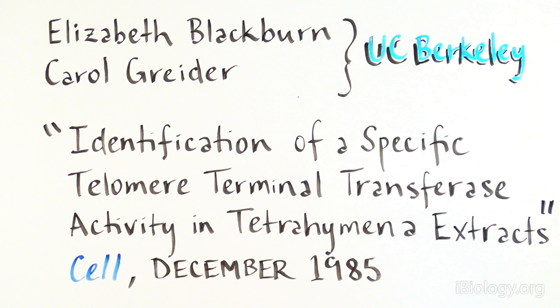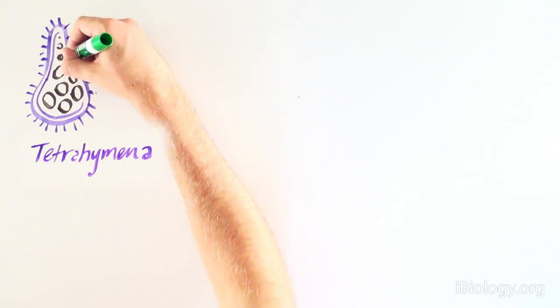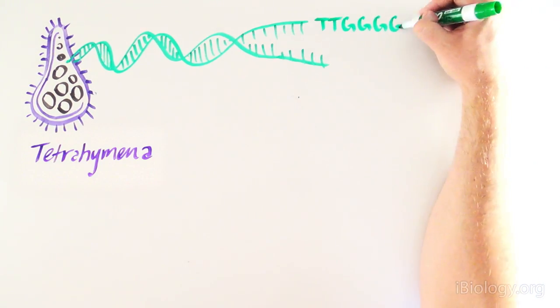This puzzle was solved by Elizabeth Blackburn and Carol Greider at the University of California, Berkeley, and published in their paper titled, Identification of a Specific Telomere Terminal Transference Activity in Tetrahymena Extracts, in Cell in December 1985. Here, the two scientists use an interesting organism called tetrahymena that also has telomeres.